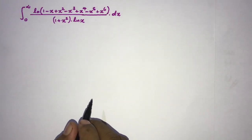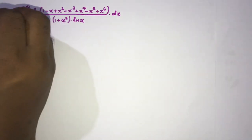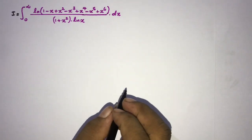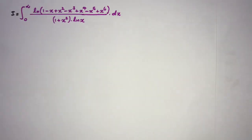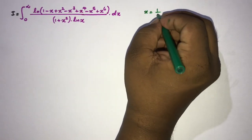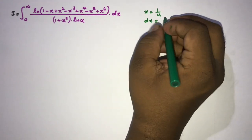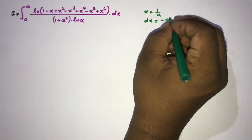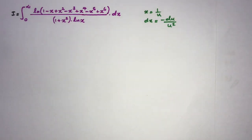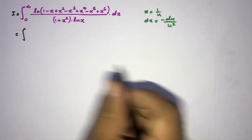First, I am going to take our integral as equal to I. Then we can use a substitution: let x be equal to 1 over u. Differentiating, dx is equal to minus du over u squared.